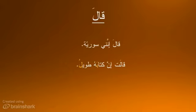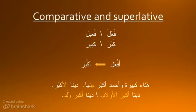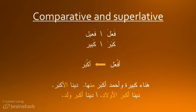قَالَتْ إِنَّ كِتَابَهُ طَوِيلٌ. فَعَلَ means 'to do' — it's the example root for different patterns and conjugations. فَعَلَ and فَعِيل: كَبَرَ and كَبِير. These two patterns are a verb conjugation and an adjective. The pattern for a comparative adjective is أَفْعَل; putting the root in gives أَكْبَر. In Arabic, كَبِير means 'old' when used for people: هَنَا كَبِيرٌ وَأَحْمَدُ أَكْبَرُ مِنْهُ. Notice that 'older' and 'oldest' are the same word — adding ال means that thing or person is the most: دِيمَة الْأَكْبَر.